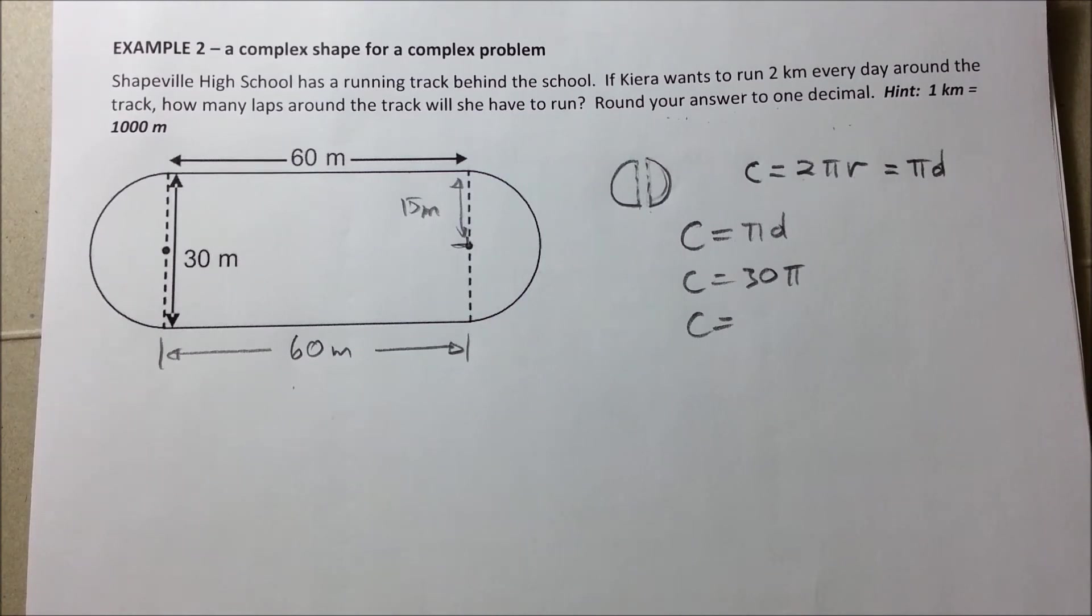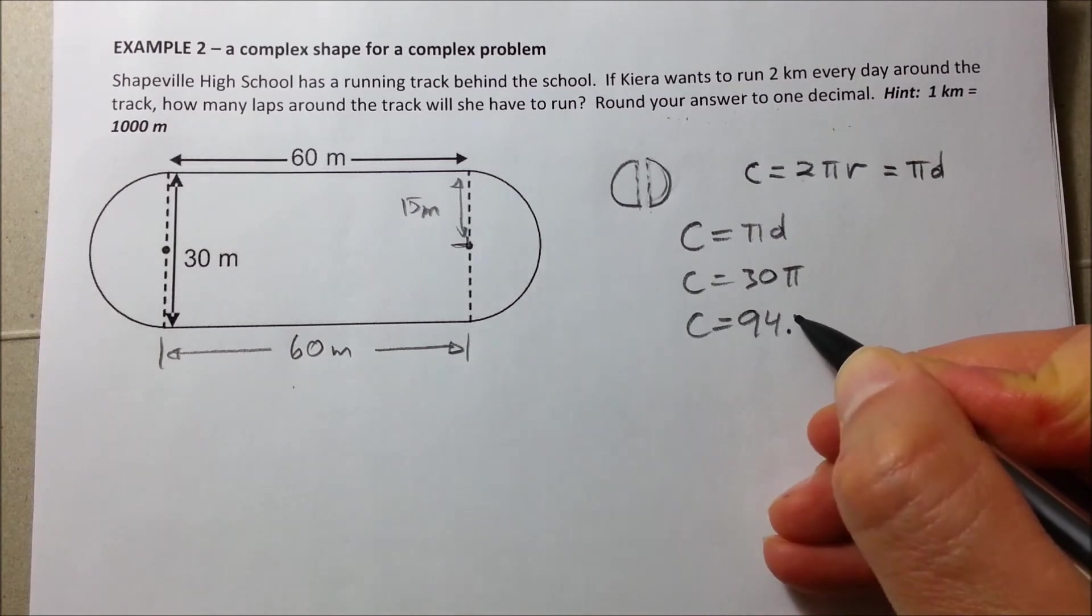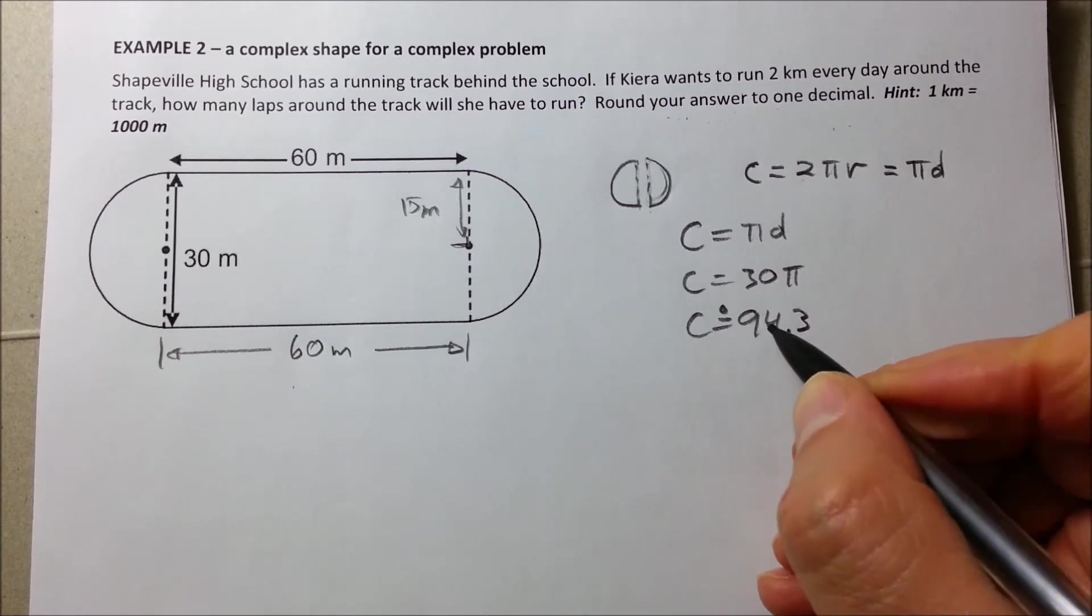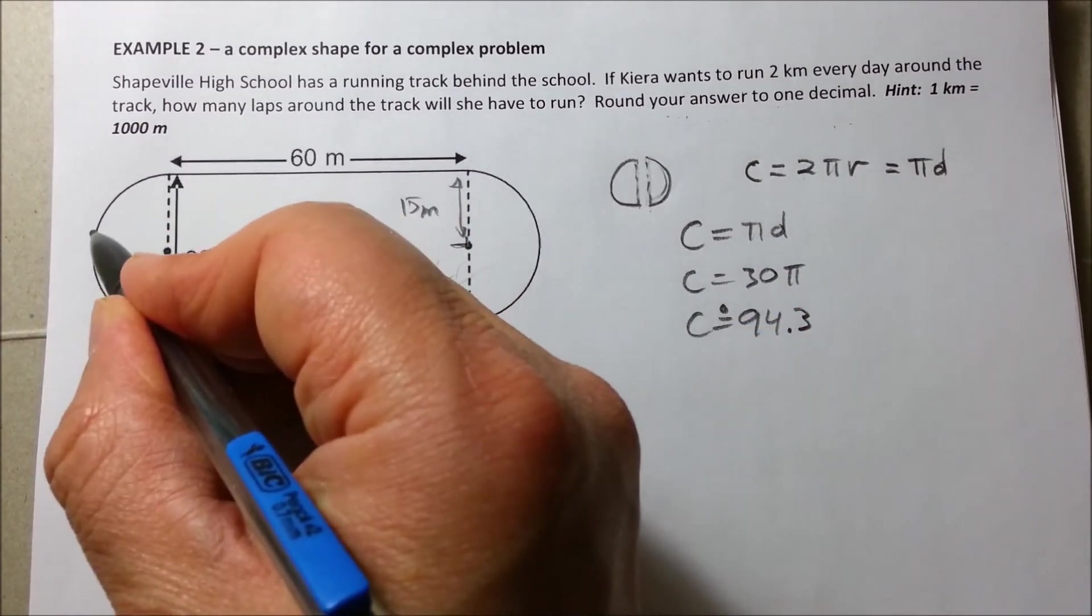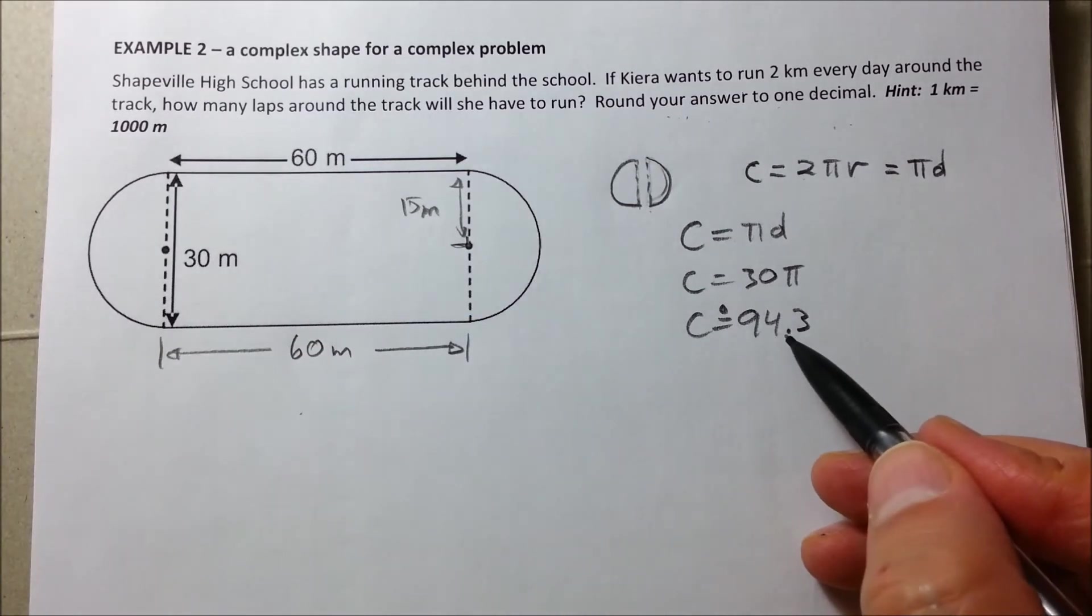So, we put it in our calculator and we get 94.2. Let's round it off to 1 decimal place since that's what they asked, right? So, that means that this length right here that I'm tracing, this entire length would be 94.3.